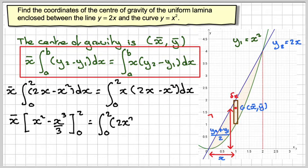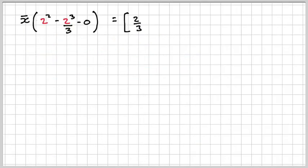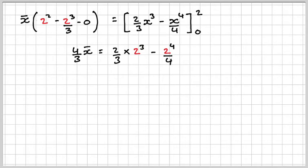Expanding the bracket here, 2x squared minus x cubed dx. So putting in 2, we're going to get x-bar as 2 squared minus 2 cubed over 3 minus 0. And now integrating this, we're going to get 2 thirds of x cubed minus x to the 4 over 4 from 0 to 2. Use the fraction balance on your calculator. That gives you 4 thirds of x-bar. Putting the numbers in, 2 thirds times 2 cubed minus 2 to the 4 over 4 minus 0.